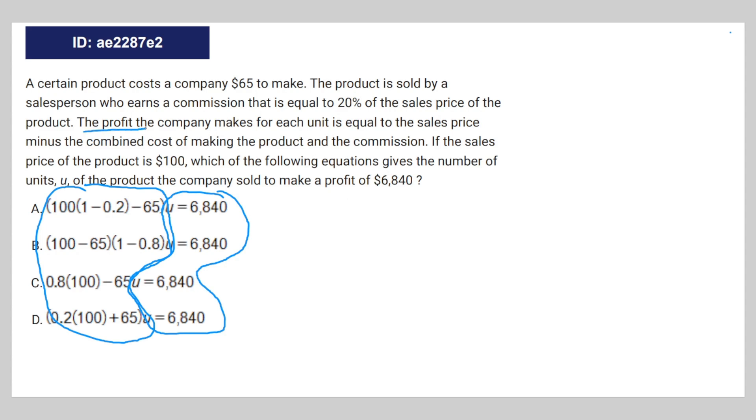Well, they actually give us that information. The profit the company makes for each unit is equal to the sales price, which is $100, minus the combined cost of making the product, that's going to be $65,